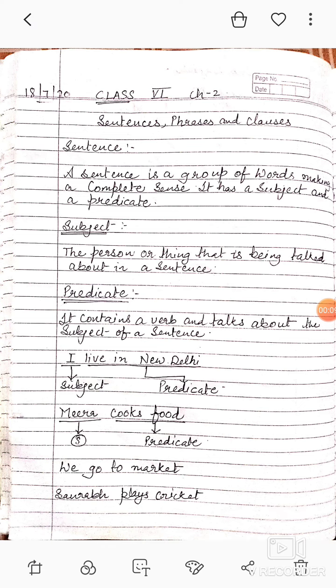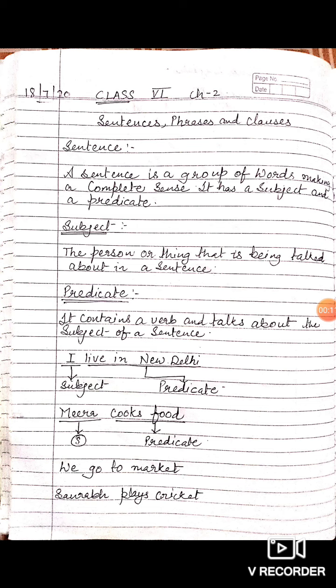Let's understand what a sentence is. A sentence is a group of words making a complete sense. It has a subject and a predicate. Aisai shabda ko samog hota hai, joh apna arth poori tarikai se spast karne mein saksham hota hai. It has a subject and a predicate. Uska ek subject aur ek predicate harta hai.